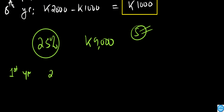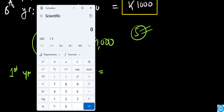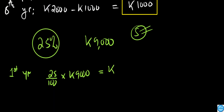In the first year, we need to find 25% of 9,000. So 25% is the same as 25 divided by 100, which is 0.25 times 9,000. That gives us the depreciation in the first year, which is 2,250.